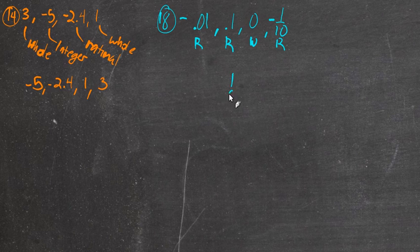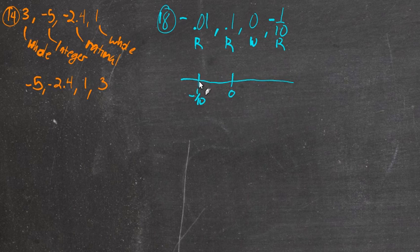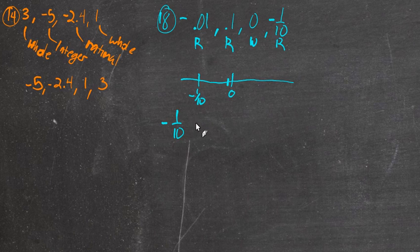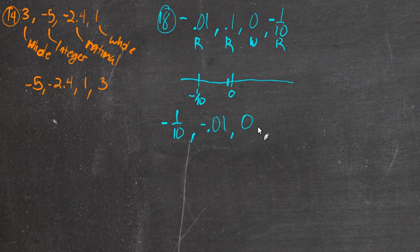So we'd have 0 here, negative 1 tenth here, and a hundredth is one-tenth of one-tenth, so negative 0.01 would be right in between. Negative 1 tenth is furthest to the left — actually the smallest. Next is negative 0.01, then 0, and positive 0.1 is the largest number.